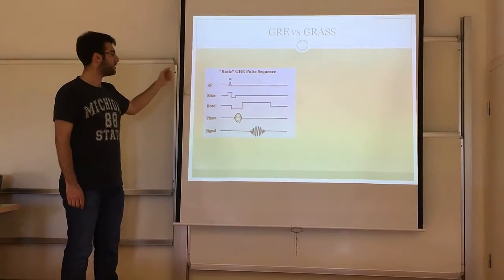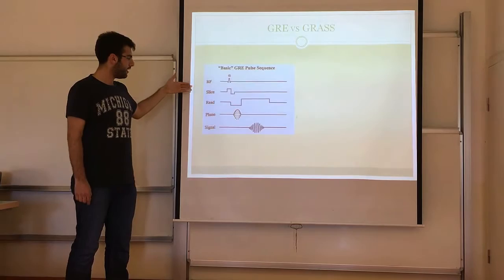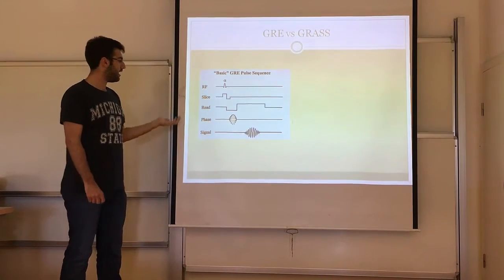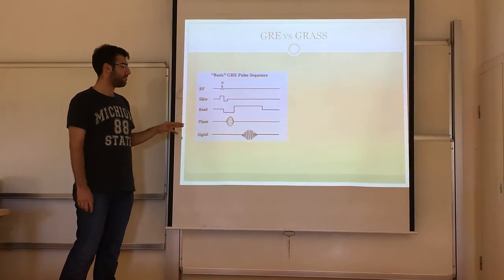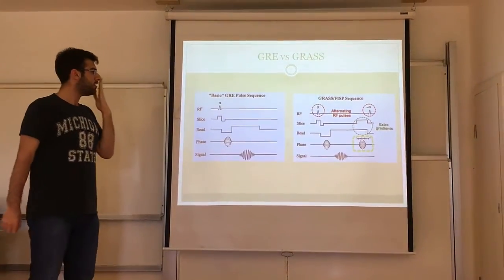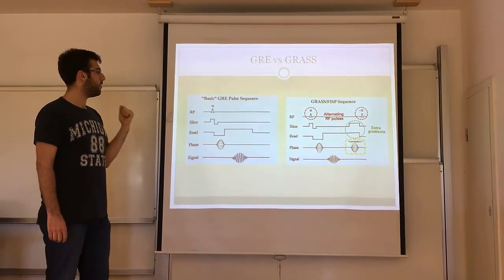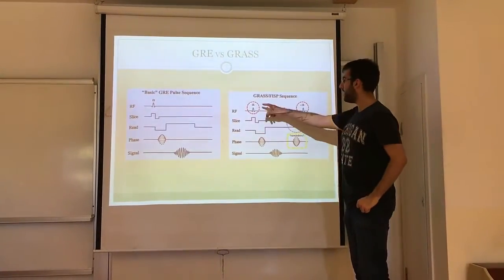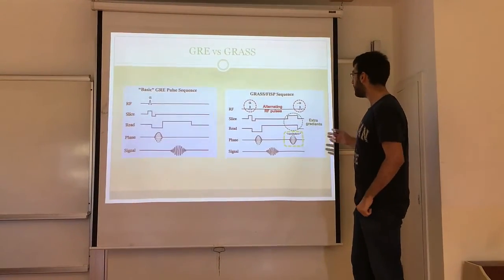In a basic gradient echo sequence we have an RF pulse, then a slice selection in the Z direction and a readout in the X direction, and a phase encoding gradient in the Y direction. Of course the coordinates can be changed because of isotropy. In the GRASS sequence there are basically three differences. The first is alternating RF pulses: we first apply alpha degrees, then minus alpha degrees, continuing as alpha, minus alpha, and so on.